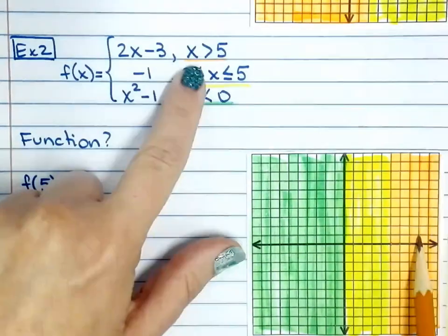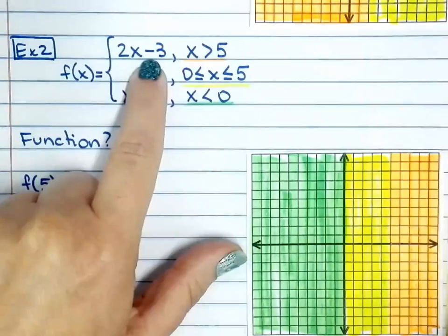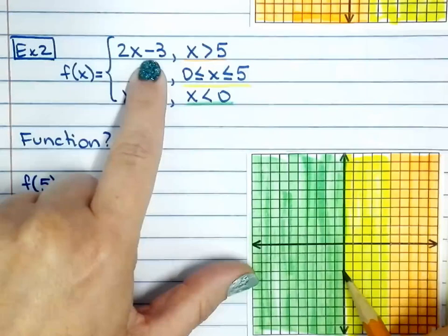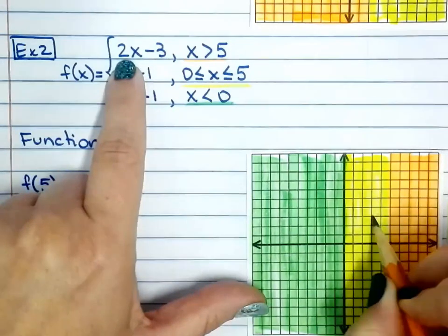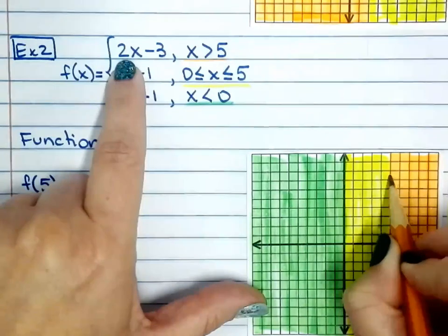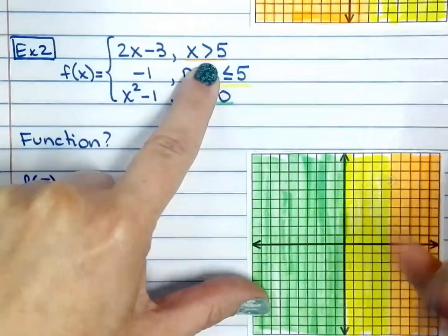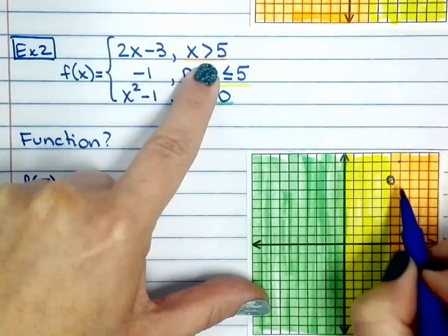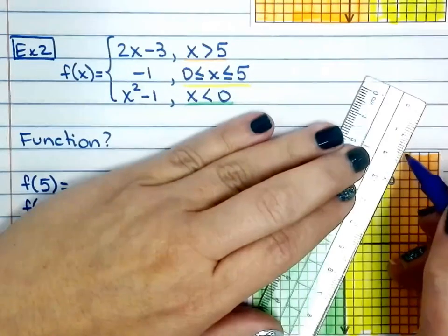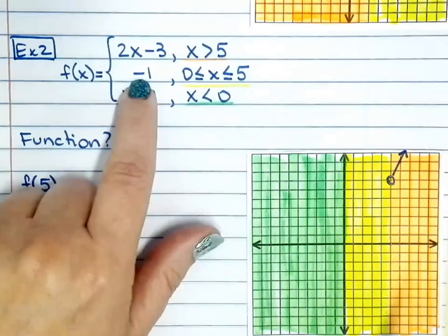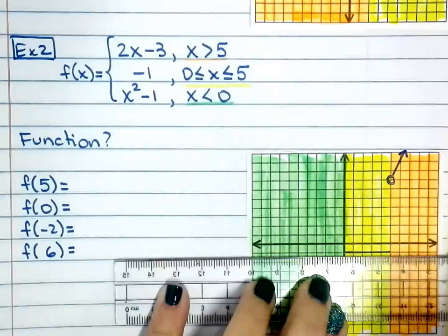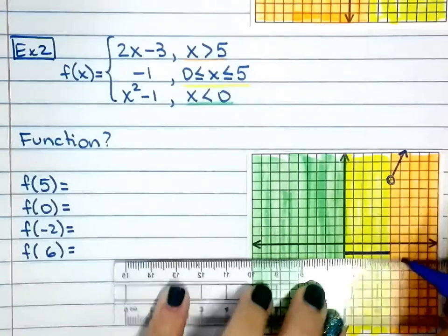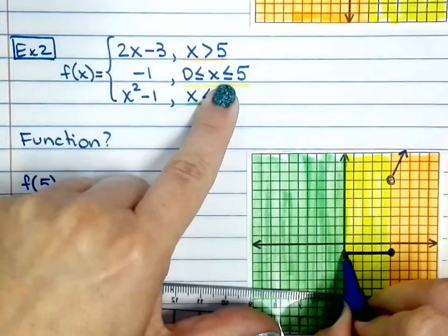Right here I'm going to graph only on the orange part where the y-intercept is at negative 3. I cannot start graphing until I get to the orange part. So at negative 3, slope is 2 — 2 up, 1 over. Then I start right there: open dot because it's only greater than 5. Open dot, then continue with slope 2 up, 1 over. And y equals negative 1 is simply a horizontal line across at negative 1 from here to here — solid dot on both ends.